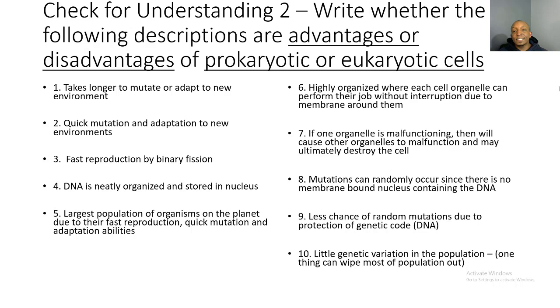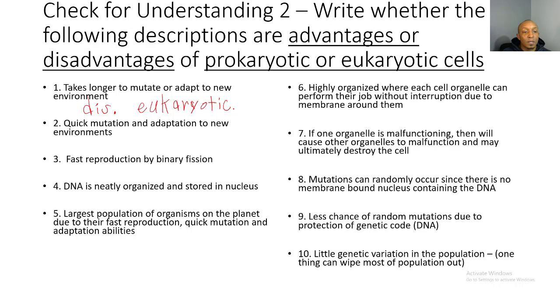Let's take a look at your second check for understanding. You're going to write whether the following descriptions are advantages or disadvantages of prokaryotic or eukaryotic cells. Let's do number one together: 'It takes longer to mutate or adapt to a new environment' — that's a disadvantage. Prokaryotic cell DNA is freely floating so it's easy to mutate, so this is a disadvantage of a eukaryotic cell, since its DNA is contained inside a nucleus which is harder to access. You have two minutes to answer the remaining questions.